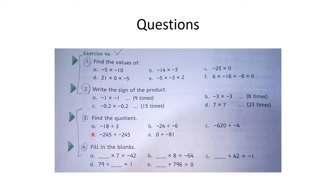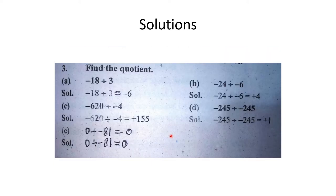E part: 0 ko kisi bhi number par divide karein — 0 divided by minus 81 — to answer 0 aayega. 0 ko divide ya multiply karein, donon surton mein answer 0 hota hai.